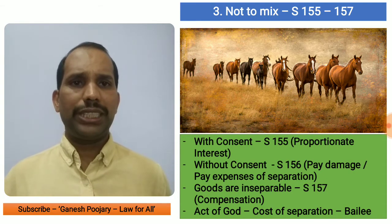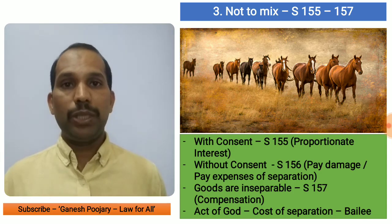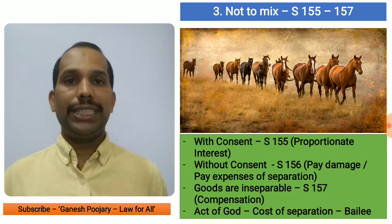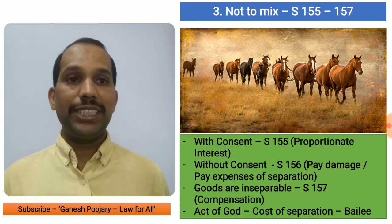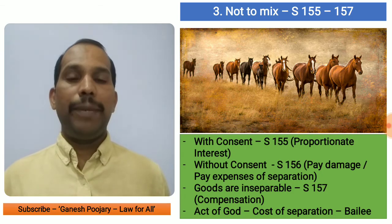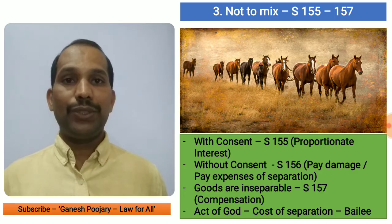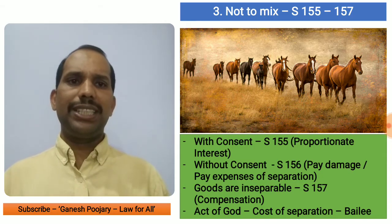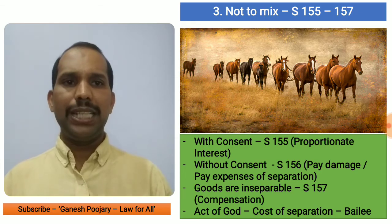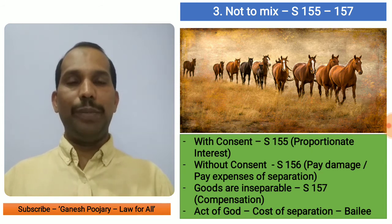There are important sub-sections here. Section 155 says that if the Bailee mixes goods with the consent of the Bailor, proportionate interest should be shared between them. Section 156 says that if mixing is done without consent, the Bailee must pay damages and the expense of separation. Section 157 says if the goods are inseparable, the Bailee must compensate the Bailor fully. If it is an act of God, he still bears the cost of separation, though without additional compensation.